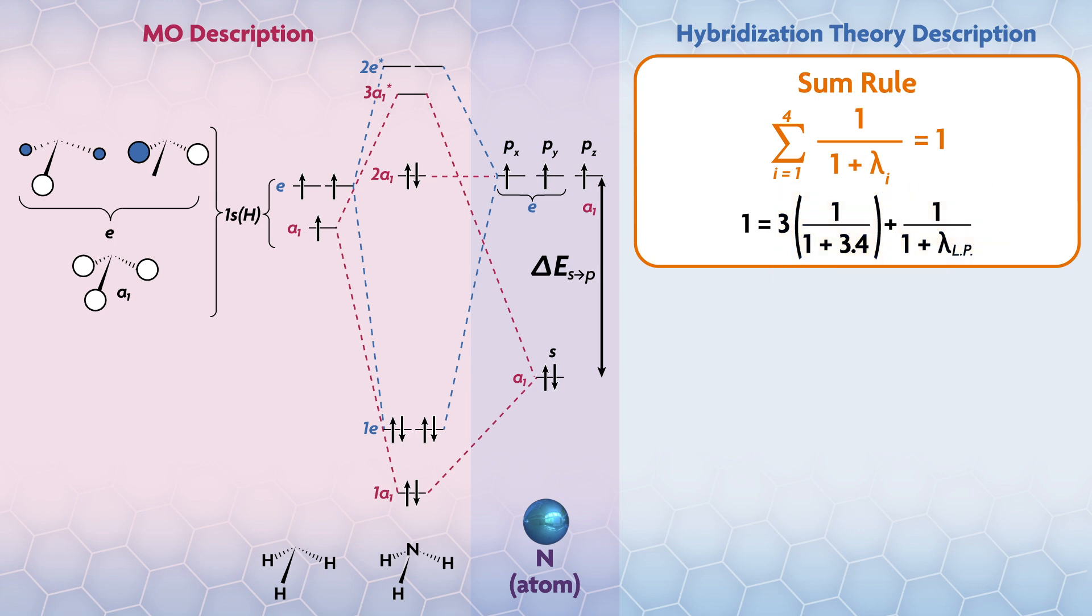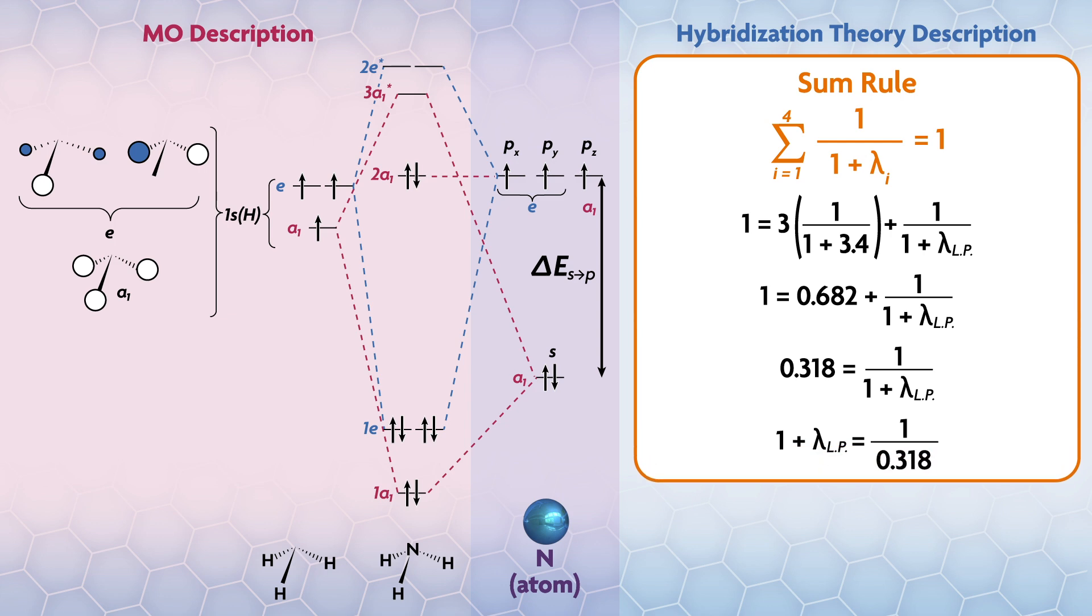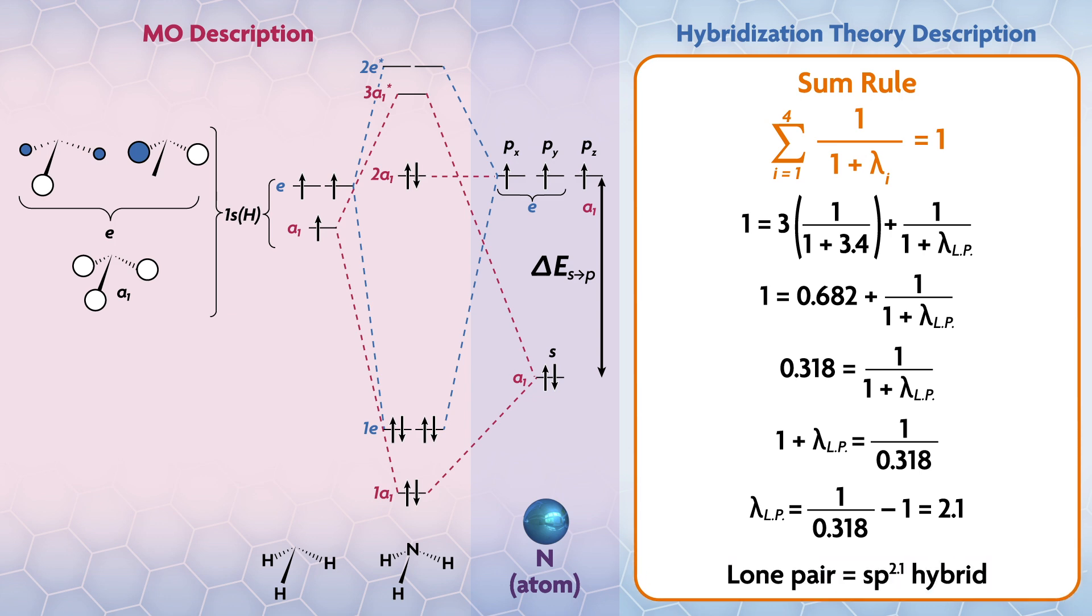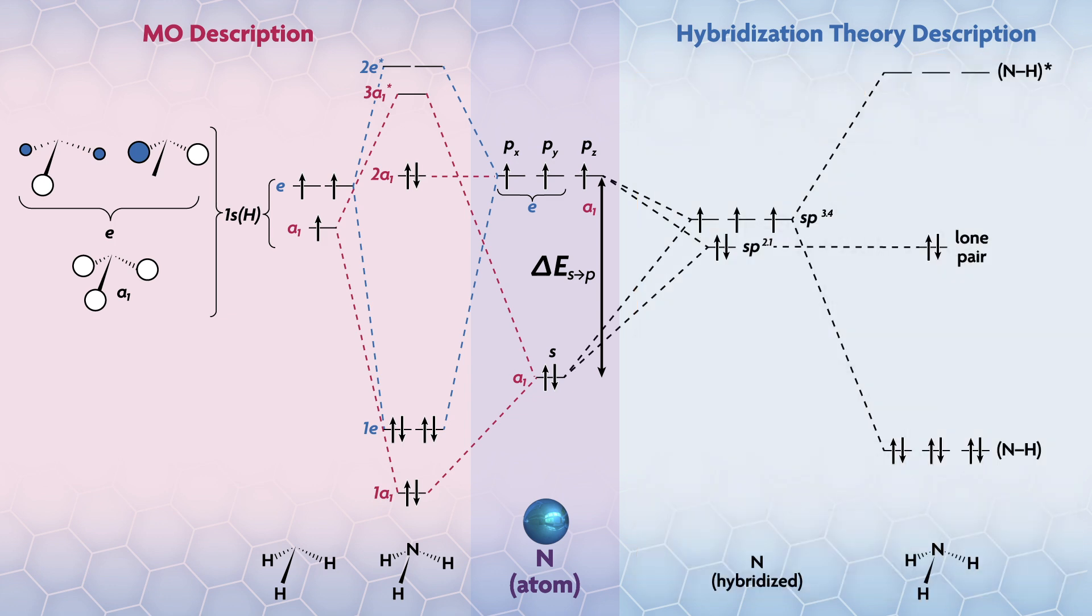Let's evaluate the first term after the equal sign, which gives approximately 0.682. Then we can subtract 0.682 from each side. We need to get λlp by itself. Let's multiply both sides by 1 + λlp, then divide both sides by 0.318. Finally, we can subtract one from both sides and evaluate the right, which gives 2.1. So the lone pair on nitrogen is residing in an sp^2.1 hybrid.